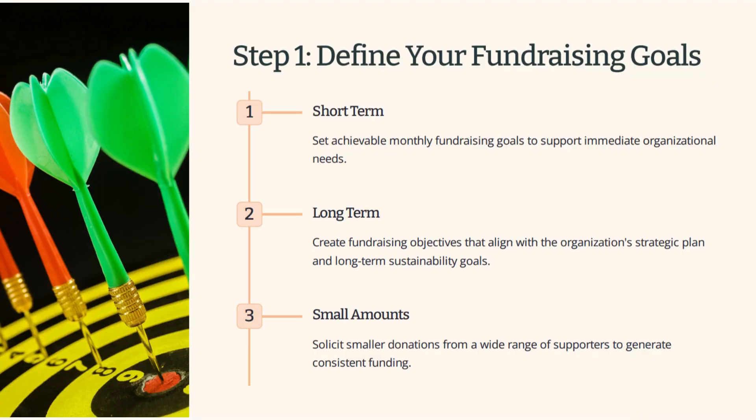The very first thing we need to talk about is identifying your fundraising goal. You will have a specific, measurable, attainable, relevant, and time-bound — SMART goals. And that goal could be something as specific as $10,000 for the new stairs within the next six months so we can have them ready to go by February. Write them down and they're going to be our anchor throughout the planning process.